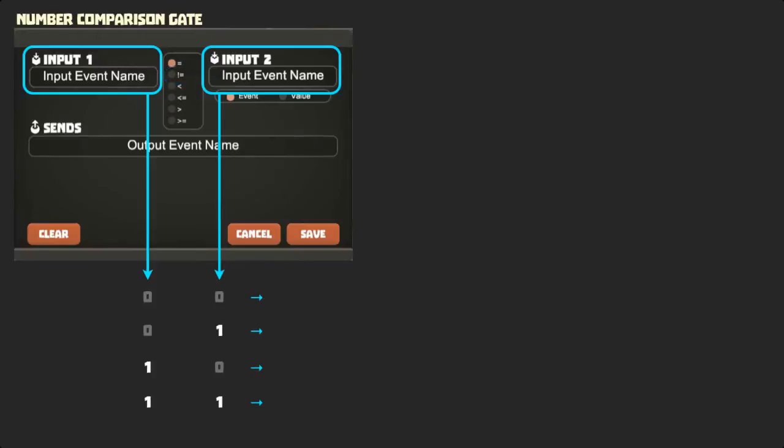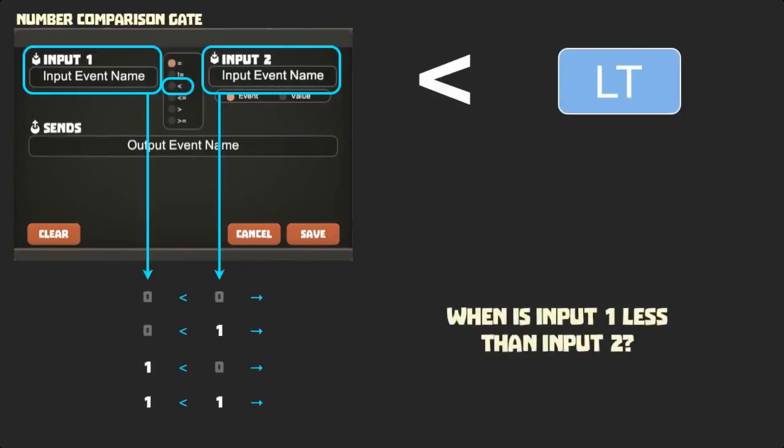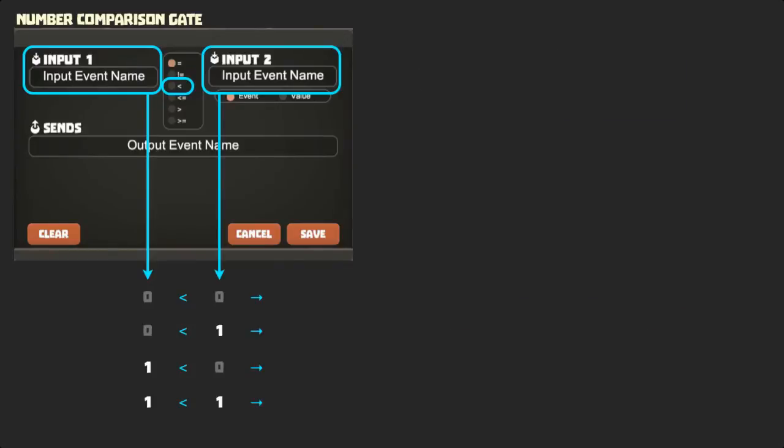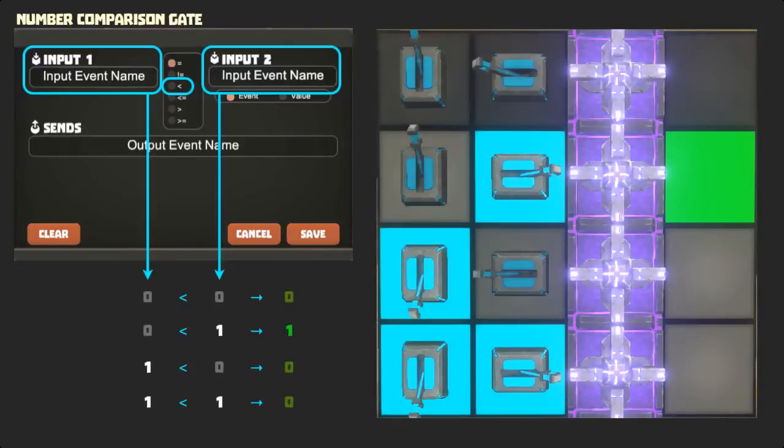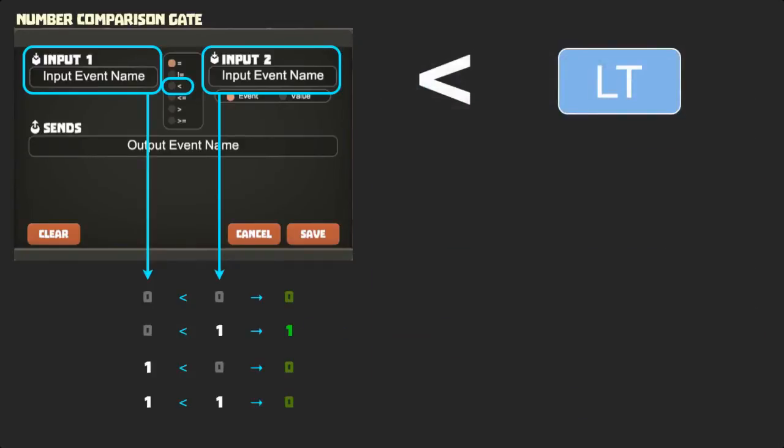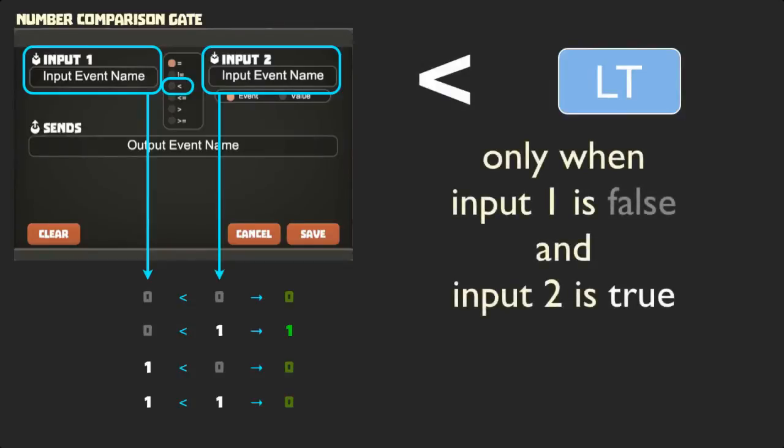From here on, our results get more interesting. The next operation is less than, which uses the classic less than symbol in the dialog window and LT in our information pane. Looking at our input possibilities as numbers, the question we want to answer is when is input 1 less than input 2? A number is not less than itself, and 1 is not less than 0, so that leaves only our second combination, 0-1. Here our rule is very specific. The less than comparator outputs true only when input 1 is false and input 2 is true.